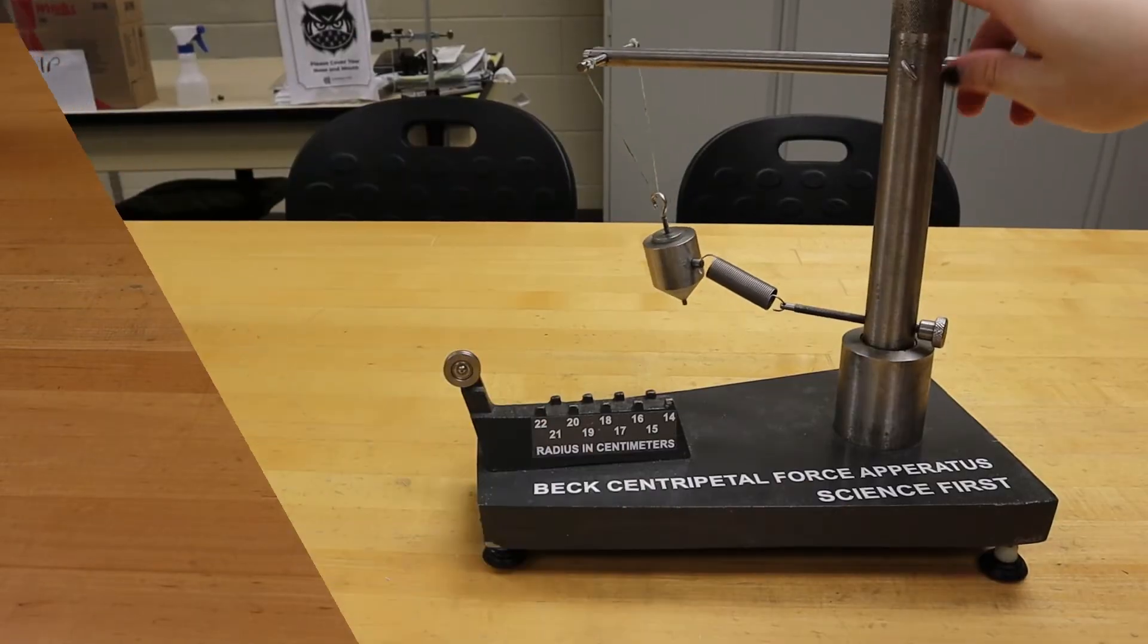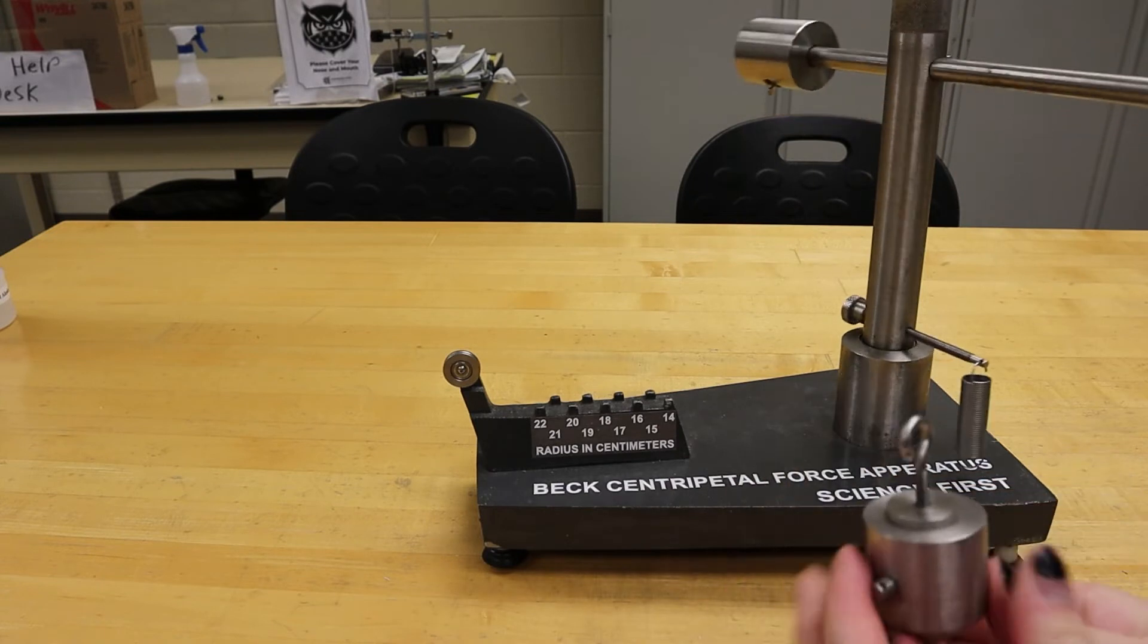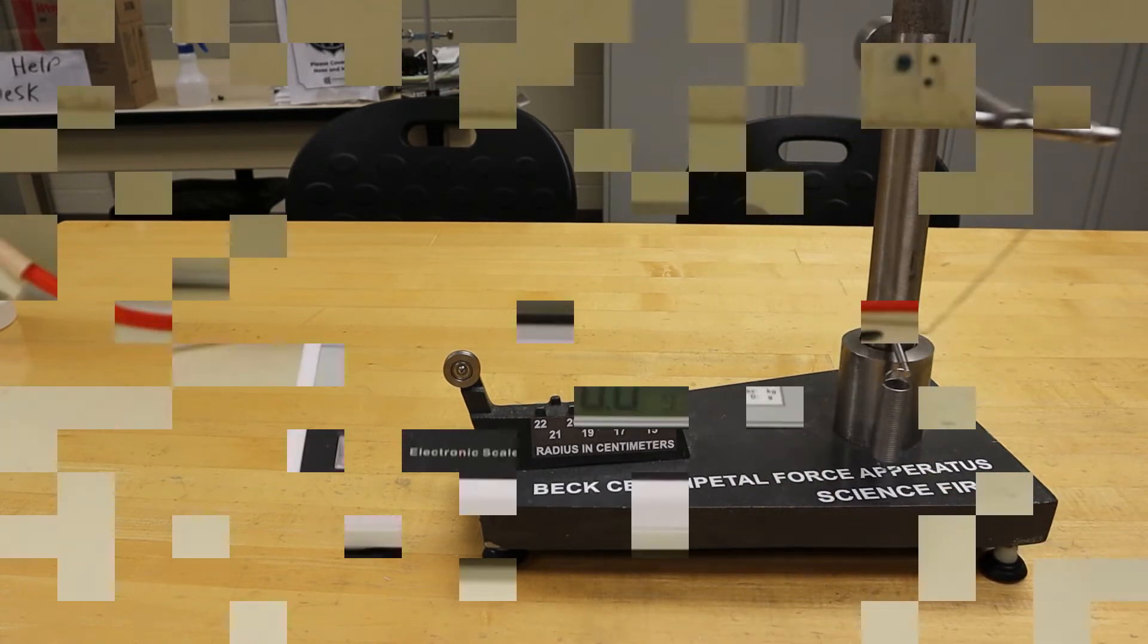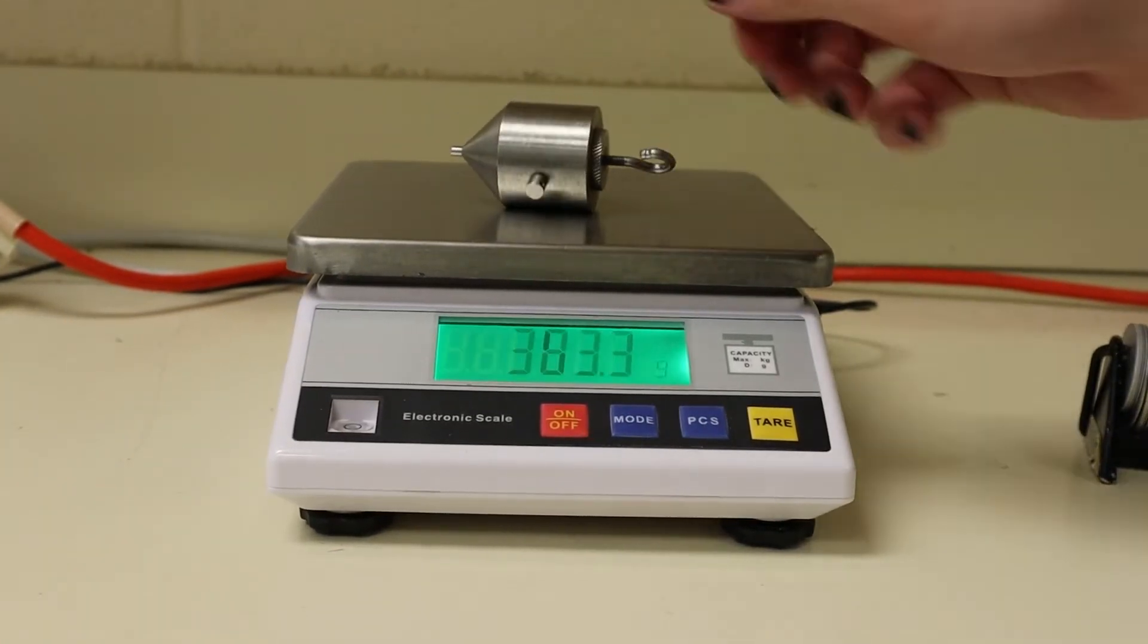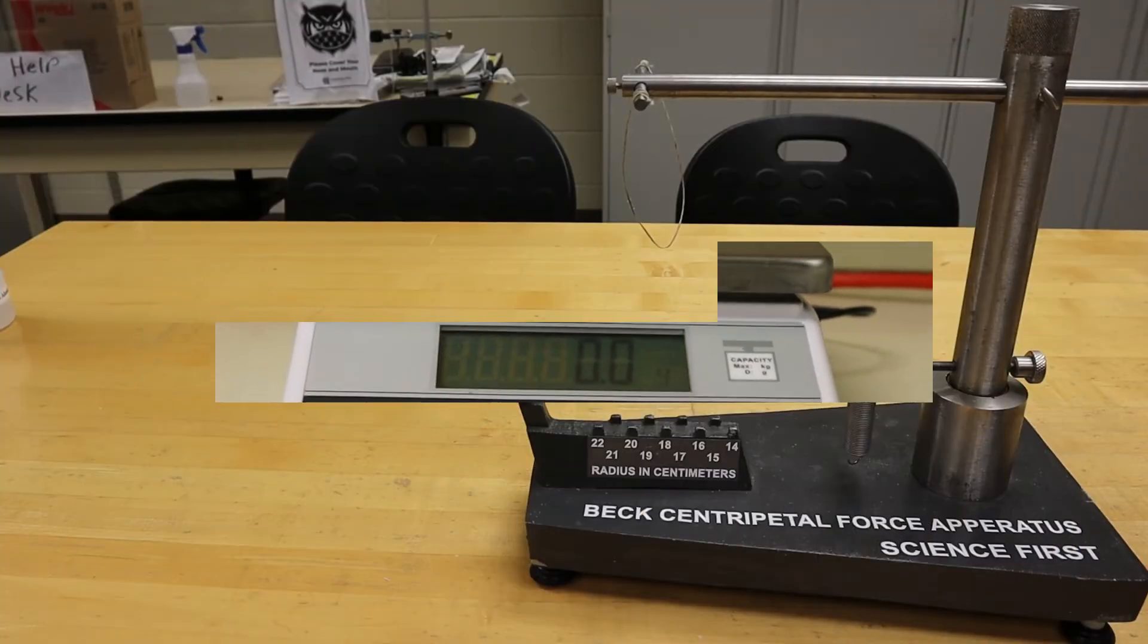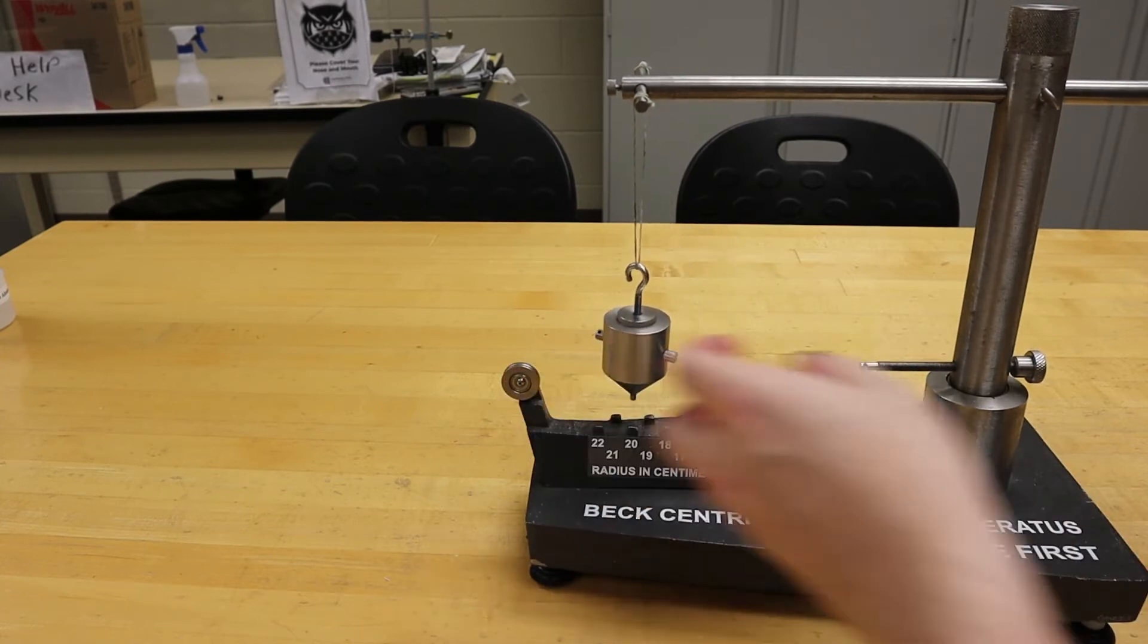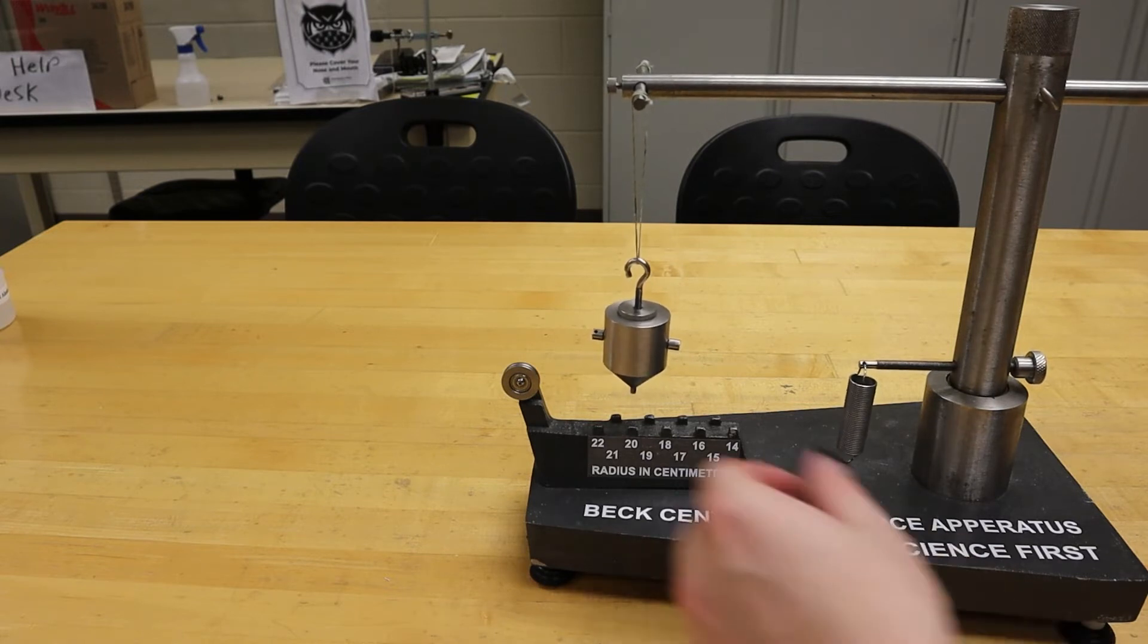We will start off by unhooking the bob from the spring and the centripetal force apparatus. We will then take the bob over to our set of scales and obtain the mass. We will then hook the bob back to the string and measure the radius that we have, which is indicated by the numbers on the centripetal force apparatus.